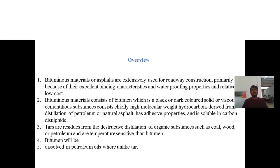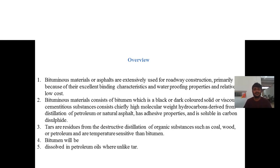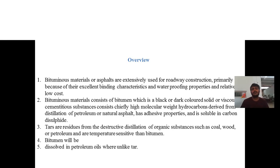The next pavement material we are going to discuss is bitumen. All bituminous materials or asphalt are extensively used for roadway construction primarily because of their excellent binding characteristics, waterproofing properties, and relatively low cost. Bituminous materials consist of bitumen, which is a black or dark-colored solid or weakly viscous cementitious substance consisting chiefly of high molecular weight hydrocarbons derived from the distillation of petroleum or natural asphalt.